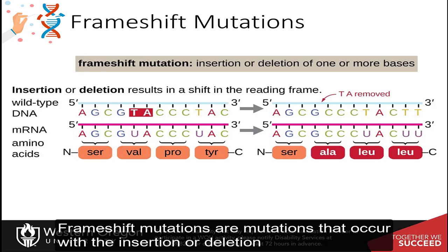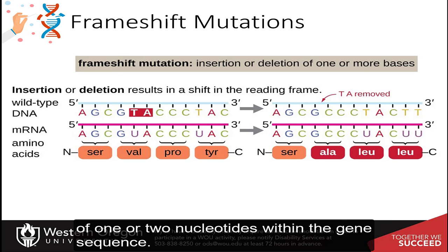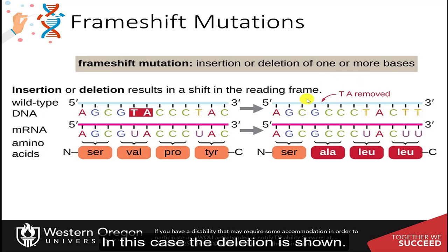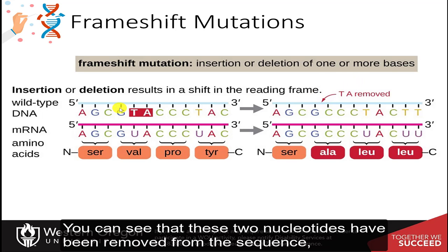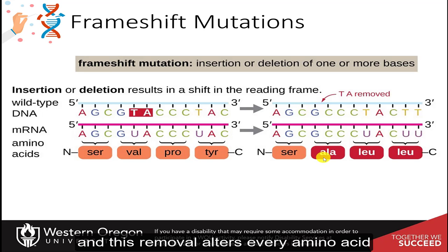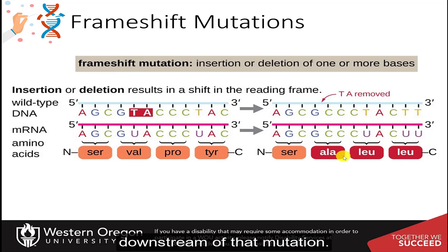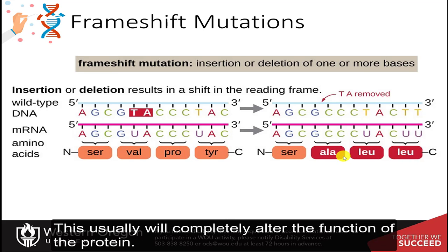Frameshift mutations are mutations that occur with the insertion or deletion of one or two nucleotides within the gene sequence. In this case, a deletion is shown — these two nucleotides have been removed from the sequence. This removal alters every amino acid downstream of that mutation, which usually will completely alter the function of the protein.